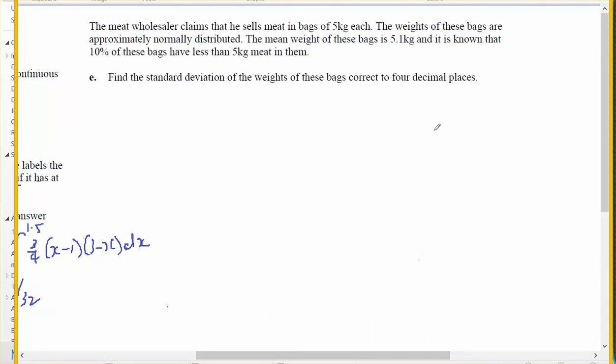The meat wholesaler claims that he sells meats in 5kg bags, and the weights of these are approximately normally distributed with a mean of 5.1. So the weights of the bags are normally distributed with a mean of 5.1 and a standard deviation that I don't know, but I do know that 10% are less than 5. Find the standard deviation.